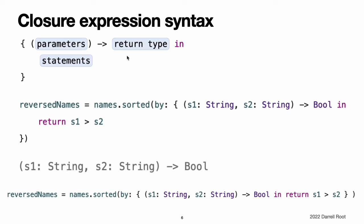Closure expression syntax has this general form. The parameters in closure expression syntax can be in-out parameters, but they cannot have a default value. Variadic parameters can be used if you name the variadic parameter. Tuples can also be used as parameter types and return types. The example below shows a closure expression version of the backward function from above. Note that the declaration of parameters and return type for this inline closure is identical to the declaration from the backward function. In both cases, it is written as (S1: String, S2: String) -> Bool. However, for the inline closure expression, the parameters and return type are written inside the curly braces, not outside of them.